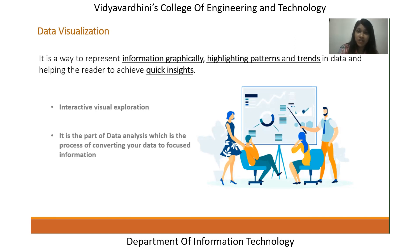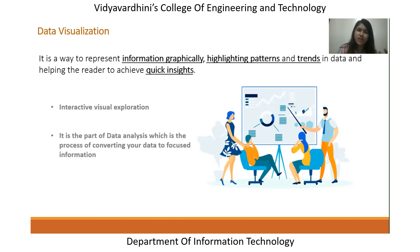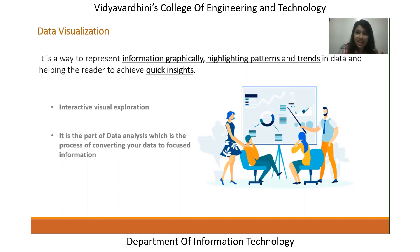For example, when we are trying to buy something on Amazon or online, what appeals to us is the image of that product. The information of the product is of course there, but when we see the image, it appeals to us more. It is relevant to everything — every product and every field. Data visualization is not only showing us some graphs or pictures, but it highlights the patterns and trends in the data.